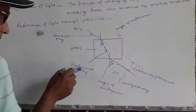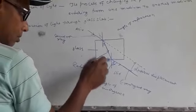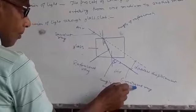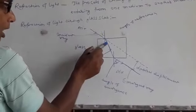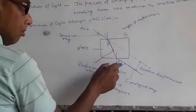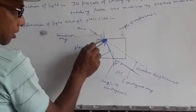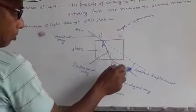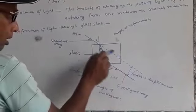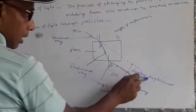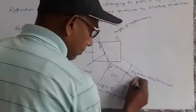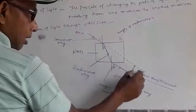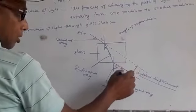The ray inside the glass is called the refracted ray, and after the light exits the glass, the ray is known as the emergent ray. The angle of incidence, angle of refraction, and angle of emergence are also shown here. When we extend the path of the incident ray, the emergent ray and incident ray become parallel to each other. The perpendicular distance between the incident ray (or its extended path) and the emergent ray is called lateral displacement.